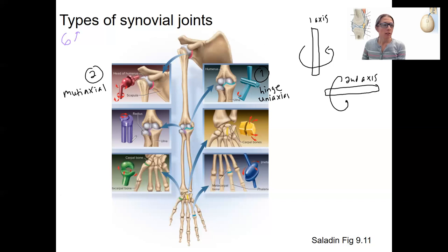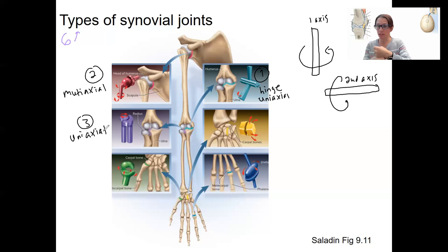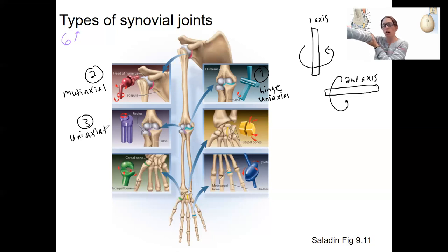One more uniaxial type: the pivot joint. This is another uniaxial joint — it can pivot, with two things rotating in one plane. That rotation is different from the rotation of your ball-and-socket shoulder, which operates in multiple planes. An example is the atlas and axis — C1 and C2 of your neck. There's also one in your arm that allows you to rotate your forearm. So that is a uniaxial pivot joint.